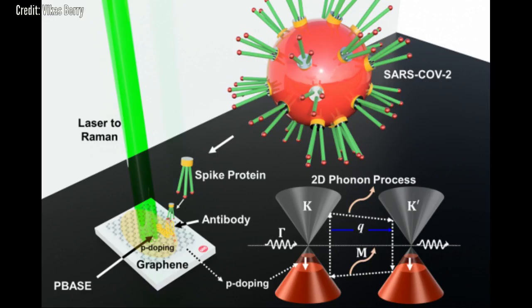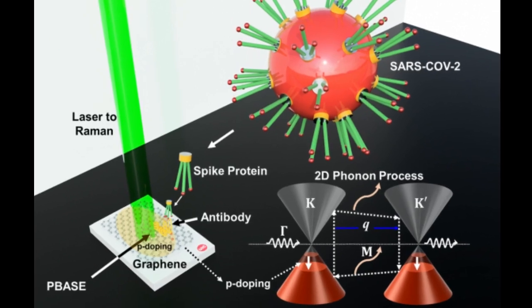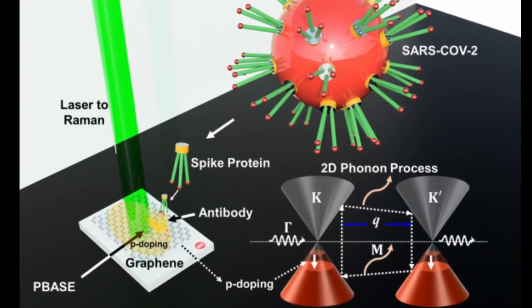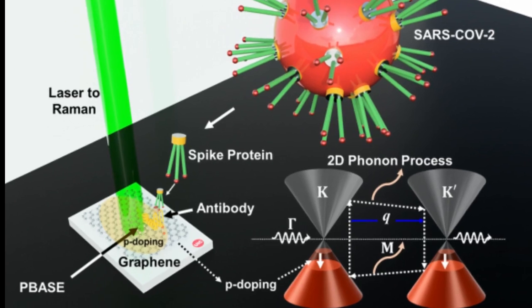They then measured the atomic-level vibrations of these graphene sheets when exposed to COVID-positive and COVID-negative samples in artificial saliva. These sheets were also tested in the presence of other coronaviruses, like Middle East Respiratory Syndrome or MERS-CoV.